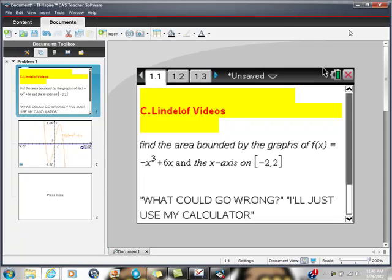Okay, so AP Calculus, we're asked to find the area bounded by the graph of f(x) = -x³ + 6x, the x-axis, on the closed interval [-2, 2]. And I'm wondering what could go wrong if I'm just going to use my calculator to do this anyway. So let's take a look at this and see what happens here.